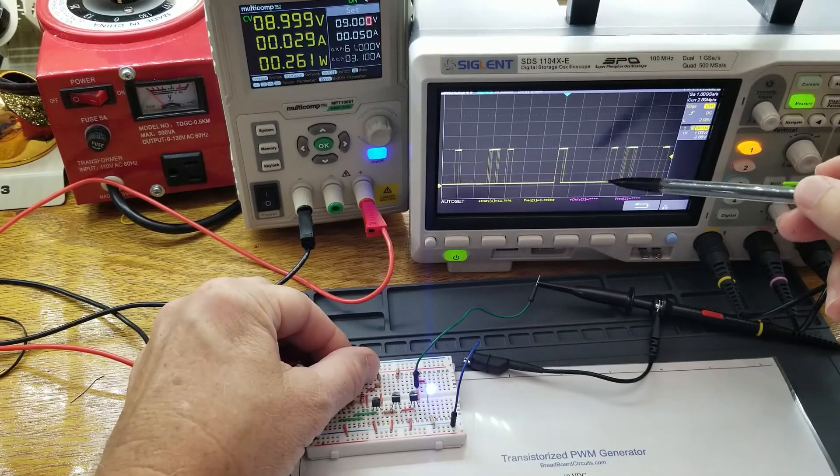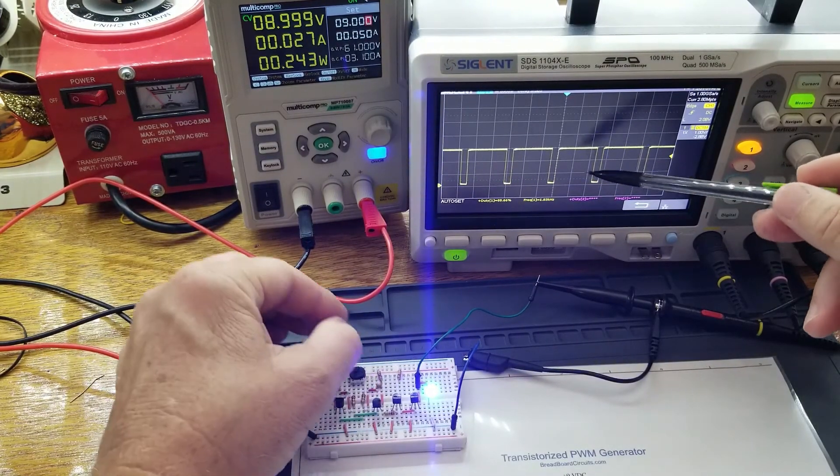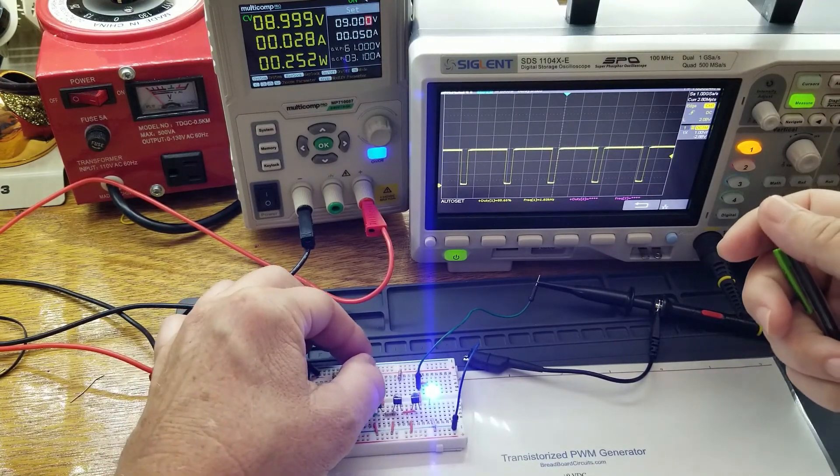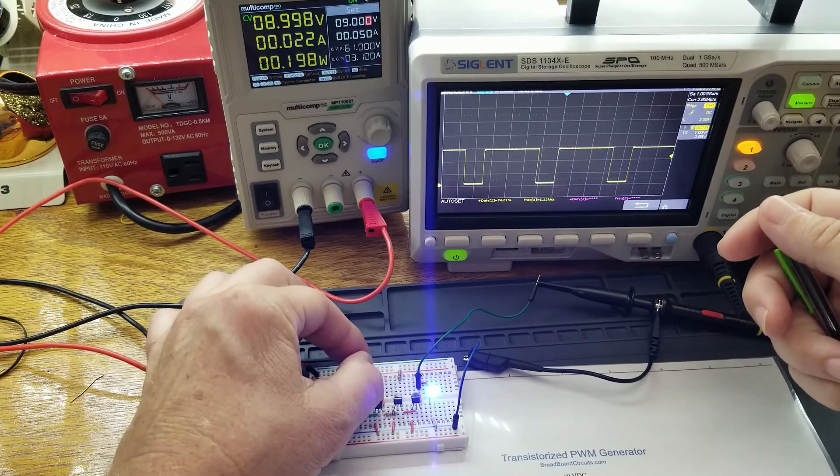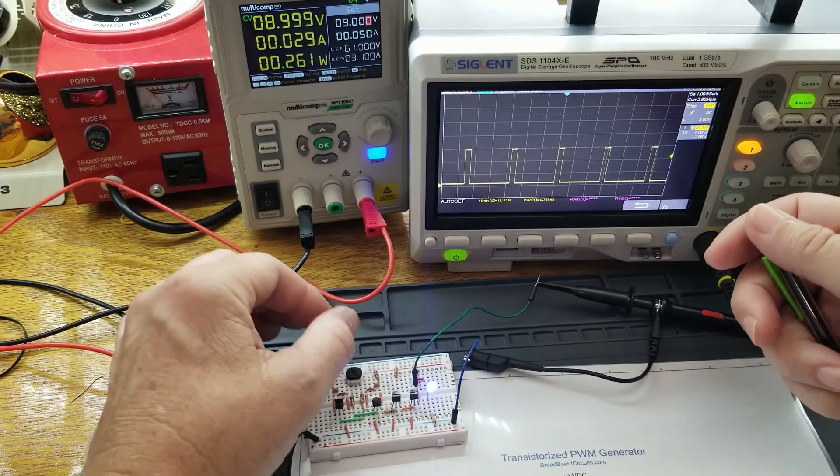By adjusting this pot here, you can see the duty cycle increases greatly. And we're now at 85% duty cycle. So you'll notice if I slowly adjust this down, the duty cycle decreases and the brightness of the LED will slowly decrease.